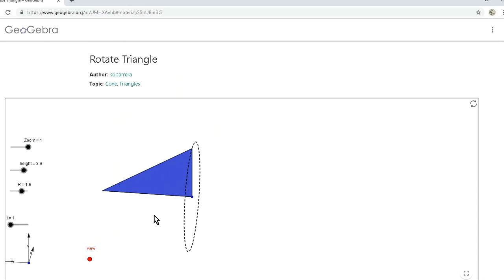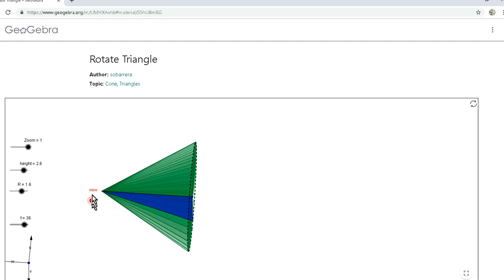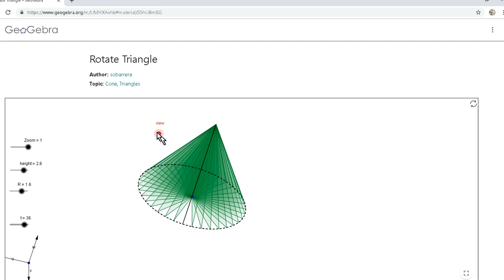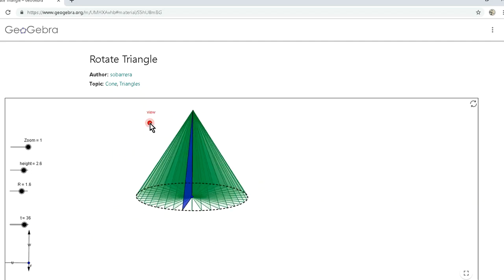We have a right triangle. Now what do we get when we rotate a right triangle about one of its legs? You see what three-dimensional shape results? Well, let's do it. So when we rotate, rotate, rotate, bam, ladies and gentlemen, we have a cone. So the result of rotating a right triangle about one of its legs is a cone.